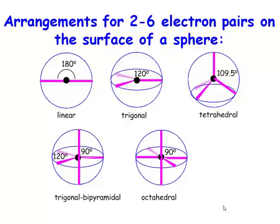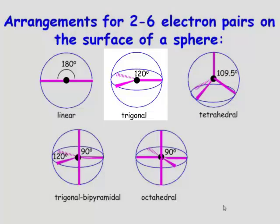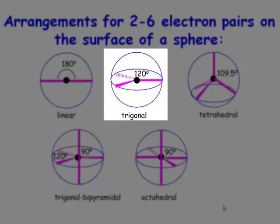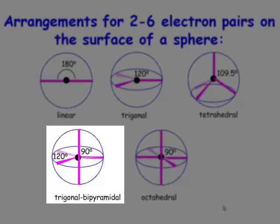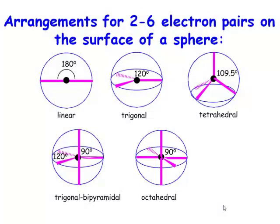If you have a steric number of two, you have a linear arrangement. If you have a steric number of three, the arrangement is trigonal. If you have five groups, the way to arrange them is a trigonal bipyramid. If you want to arrange six groups in space as far apart as possible, then you're going to have a central atom with an octahedral disposition of your groups bonded to it.